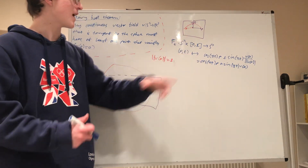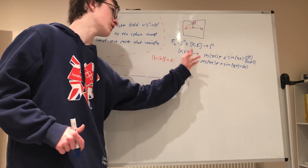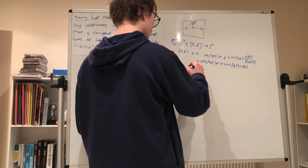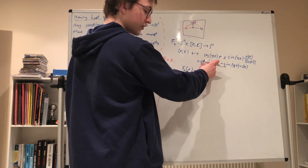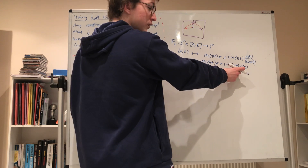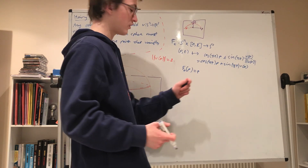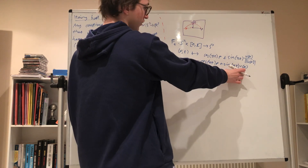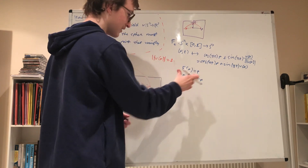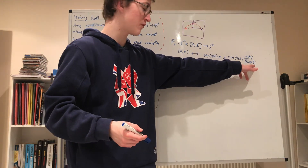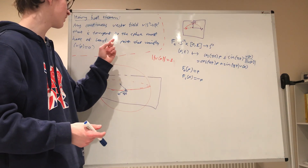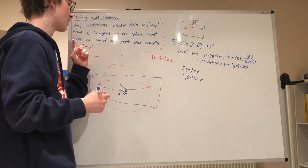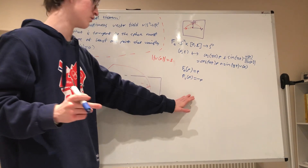This map is, I claim, a homotopy between the identity and the antipodal map. This is easy to verify: F_0(P) = cos(0)·P + sin(0)·V(P) = P, so F_0 is the identity. And F_1(P) = cos(π)·P + sin(π)·V(P) = −P, so F_1 is indeed the antipodal map. Therefore, assuming V(P) is continuous and does not have at least one point that vanishes, this defines a nice continuous homotopy.